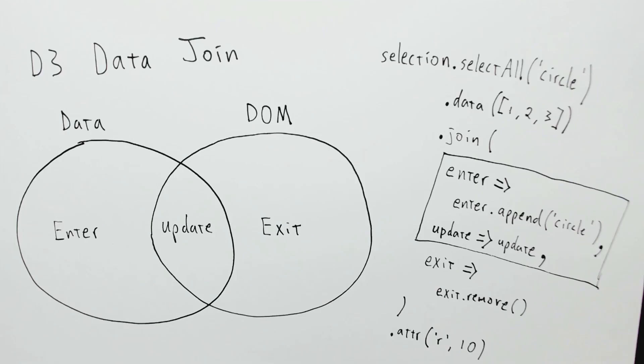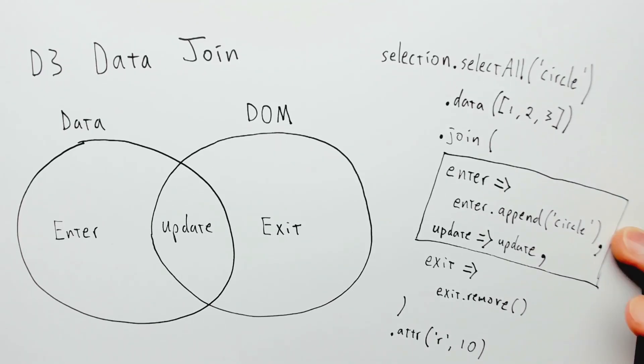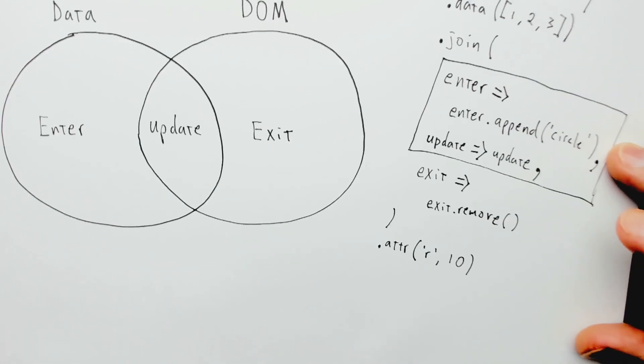So that's the D3 data join in a nutshell. Let's look at some specific examples.